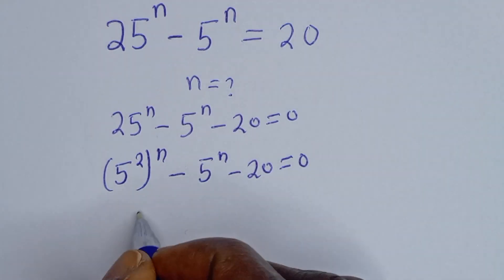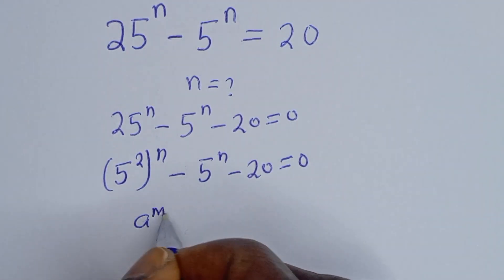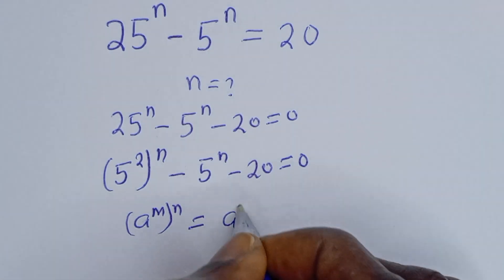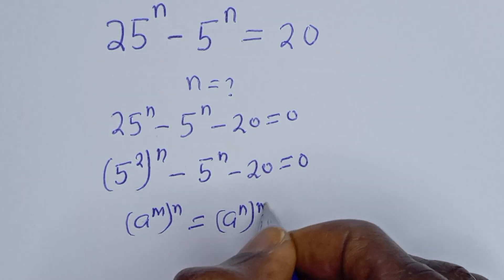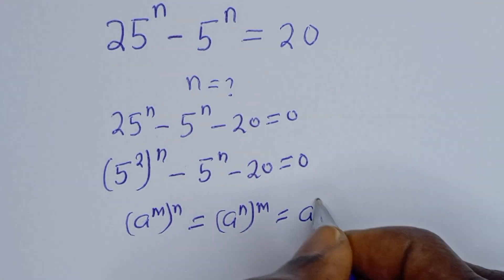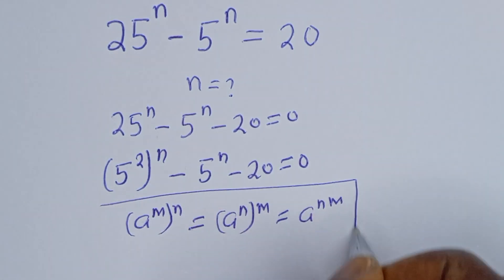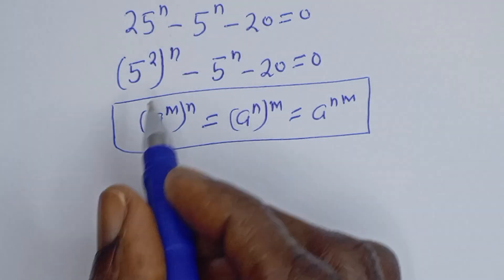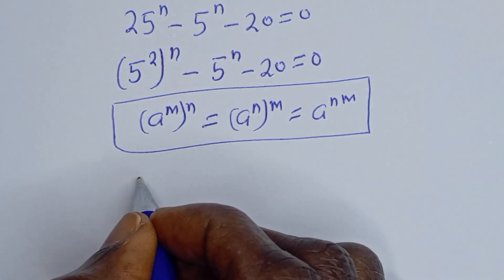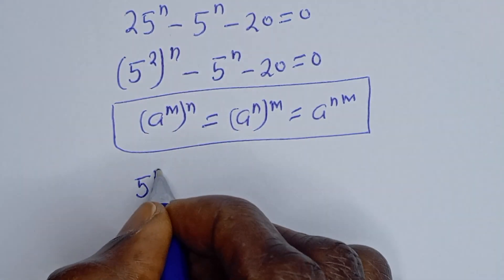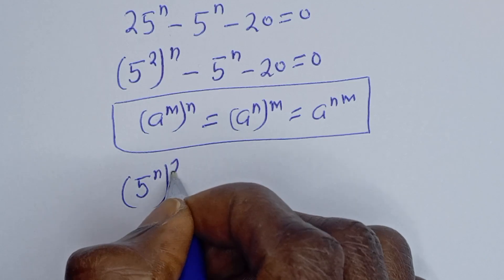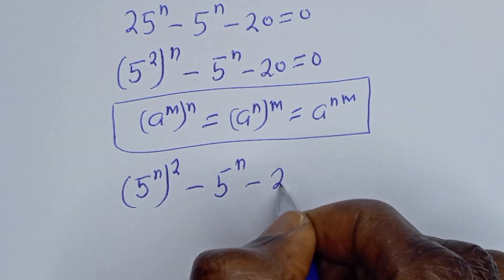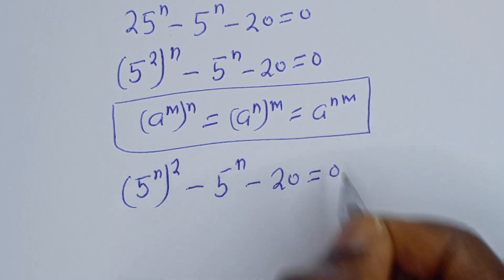Take note of this exponential rule: if you have a raised to power m, to the power of n, it is equal to a raised to power n to the power of m, which equals a raised to power nm. Then 5 squared to the power of n can be written as 5 to the power of n, all squared, minus 5 to the power of n, minus 20 is equal to 0.